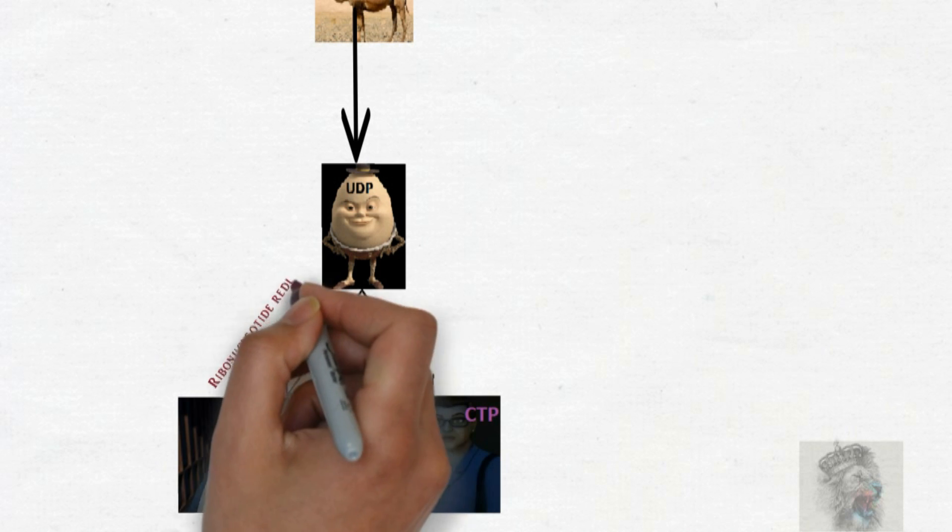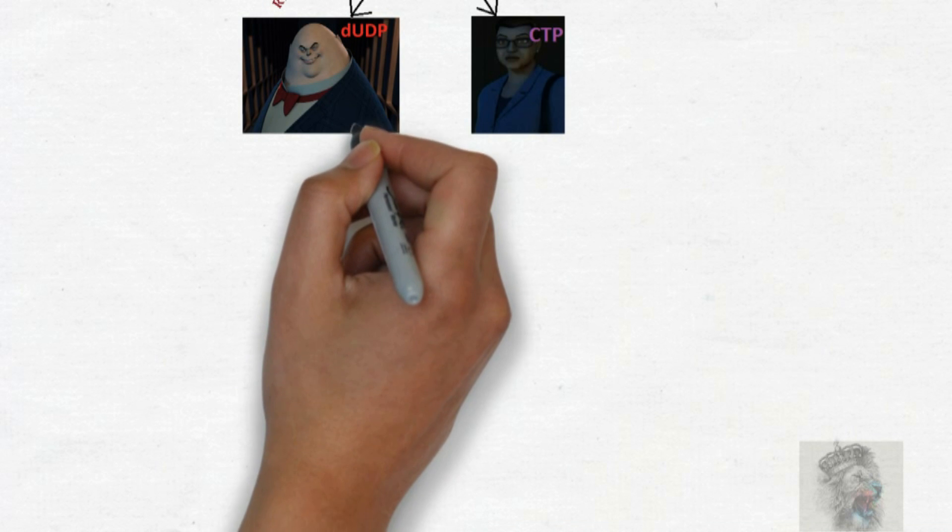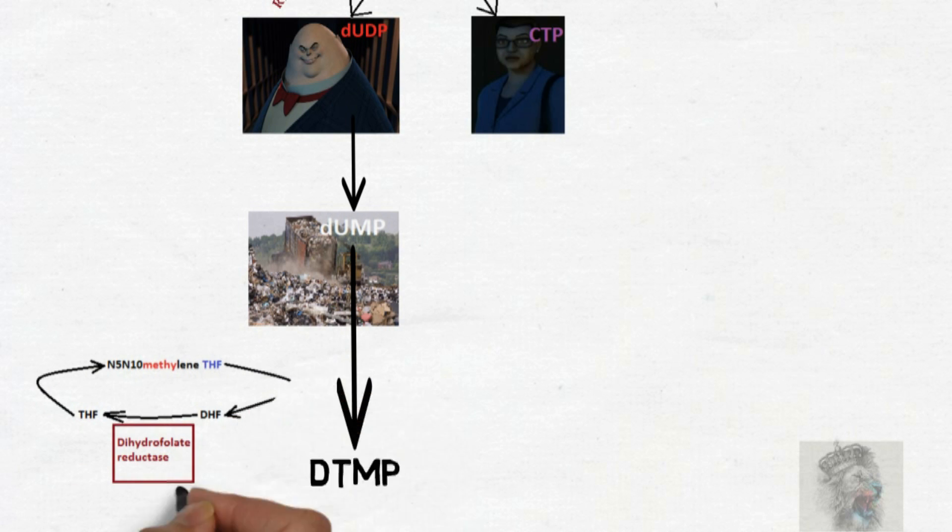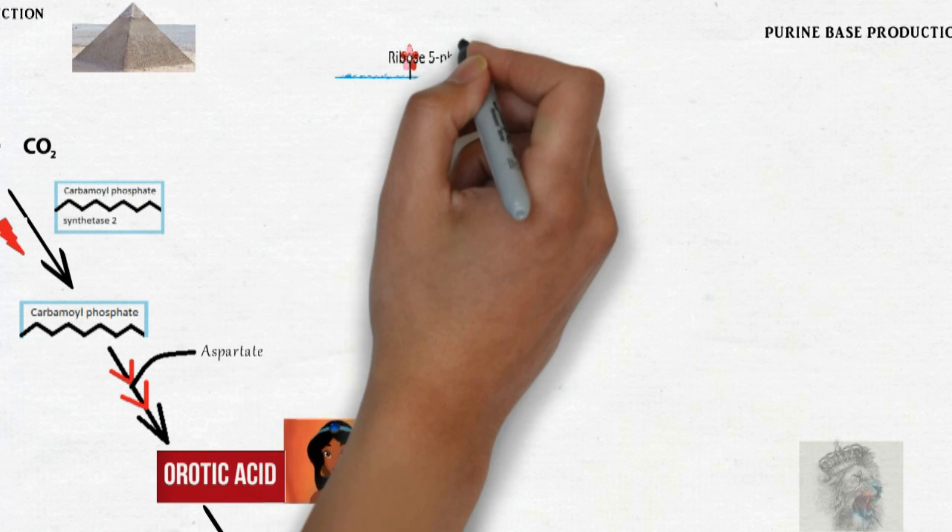...using ribonucleotide reductase. dUDP dumped her as dUMP in a location called dTMP. During this time, he needed some documents for it. Therefore, he needed 5,10-methylene tetrahydrofolate which he converted into dihydrofolate, which he needed also a stamp for it to convert into tetrahydrofolate—that is dihydrofolate reductase—and thereby converting into the last document again, pasting at the back of the document 5,10-methylene tetrahydrofolate. And no one doesn't know this and she's dead.